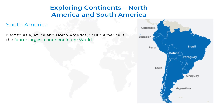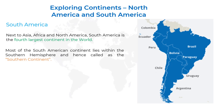Asia, Africa, and North America are the largest continents. The second point is: most of the South American continent lies within the Southern Hemisphere, and hence it is called the Southern Continent. Most of the parts of the South American continent are situated in the Southern Hemisphere of the Earth.